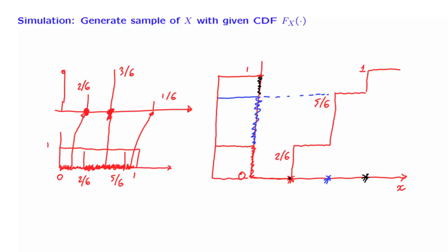So what's a graphical way of understanding what we're doing? We take the CDF, generate a value of the uniform, move until we hit the CDF, and report the corresponding value of x. It turns out that this recipe will also work in the continuous case.